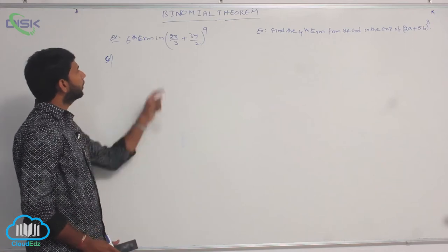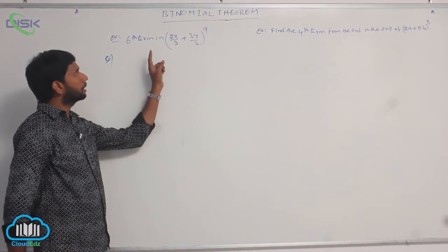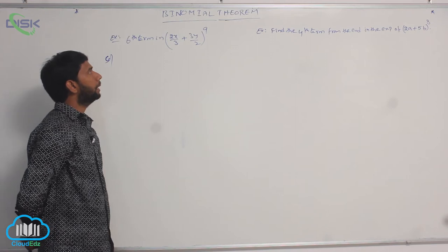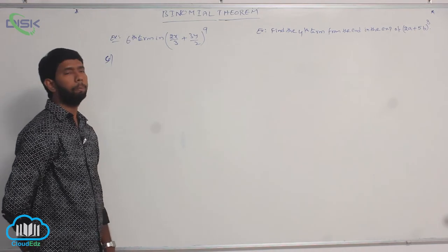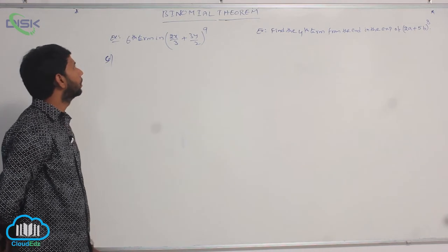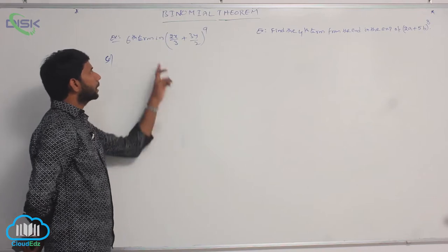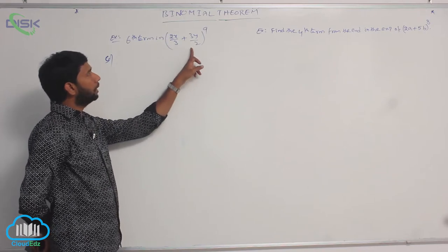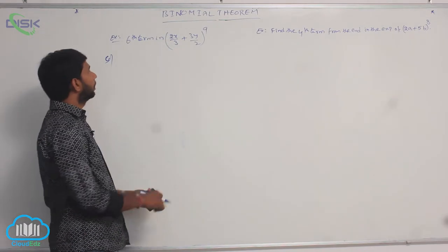Find the sixth term in the expansion of (2x/3 + 3y/2)^9.